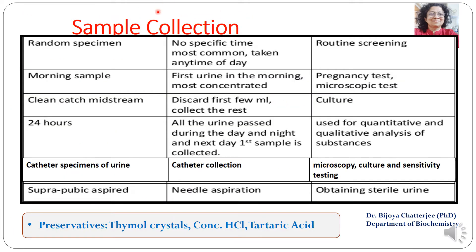Before we proceed with the tests, let us know about sample collection. There are six types. The first is random specimen collection, for which no specific time is required — it is the most common way urine is collected, taken at any time of day, used for routine examination. The second is the early morning sample, which is the first urine of the morning, the most concentrated urine, generally used for pregnancy tests or microscopic examination.